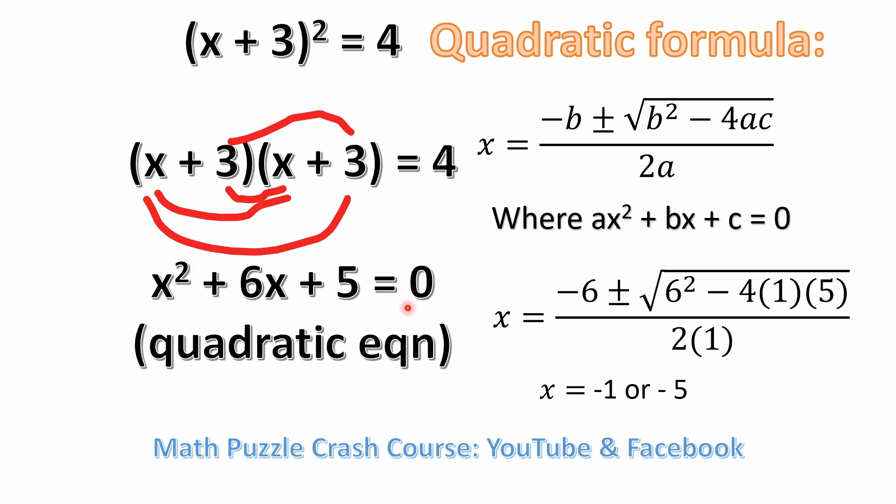So this entire equation here is equivalent to this x plus 3 quantity squared equals 4. This is the same as this. And you see, all we did was multiply it out.